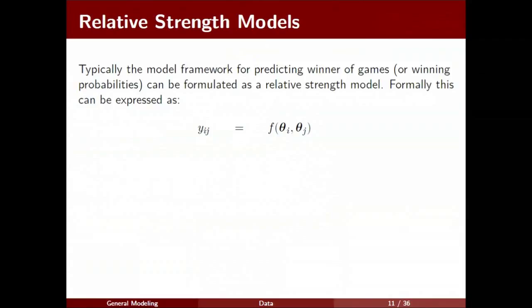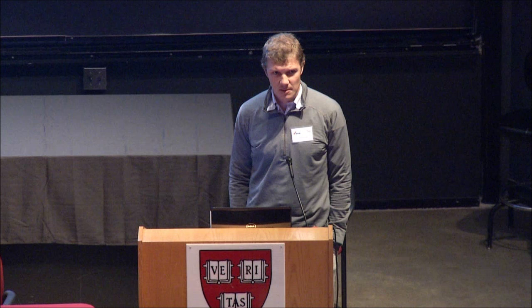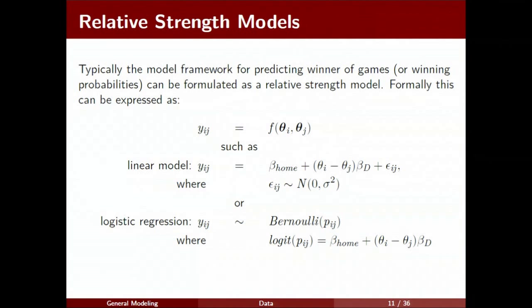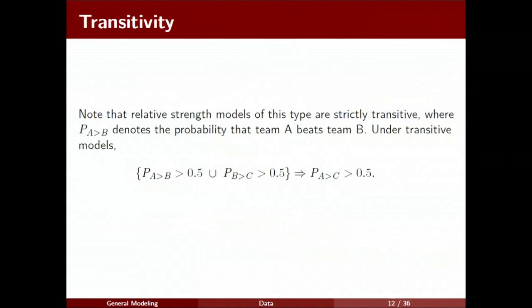I want to talk about a very general class of models, we're going to call these relative strength models. The idea here is they're going to use some metrics, whether it's team-level characteristics or those ratings and rankings, to estimate the strength of each team. And then your prediction would be based on some sort of relative comparison between those two teams. A couple of really simple models in this framework would be a linear model, where Y_I,J would be the actual point spread or point differential between the two teams. So you can imagine there's some home court effect, and then you're going to have some difference in those team strengths, theta-I and theta-J, and a normal error. You could also do a logistic regression type model, where Y_I,J now is a binary outcome, one if team I actually wins. And you might use the same idea: home court effect and then the difference in strengths.